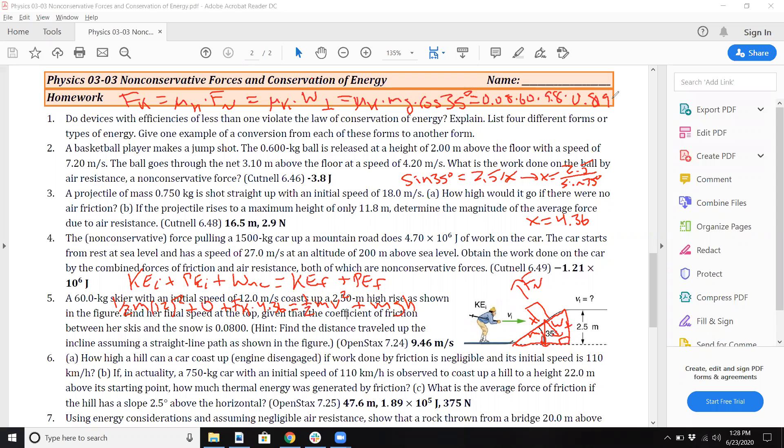0.08 times 60 times 9.8 times cosine 35. So this is a doozy. Cosine 35, you should get 0.819, multiply that to 0.08 times 60 times 9.8, so you get 38.53.